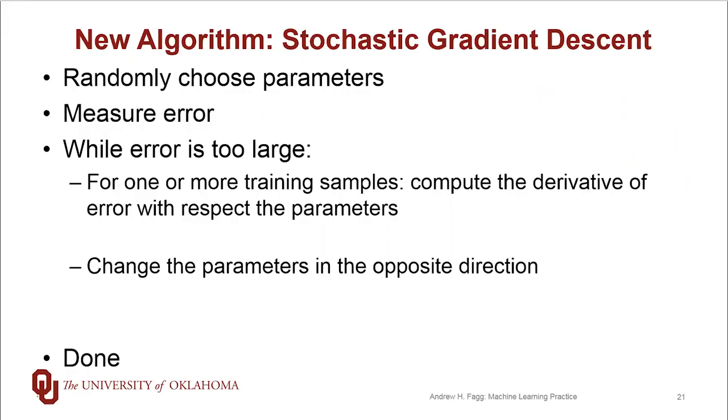So here is our candidate algorithm. And this is actually implemented for us in scikit-learn under the heading of stochastic gradient descent. We're going to first randomly choose our parameters w0, 1, and 2. We can measure the error. And while that error is too big, then we're going to grab either all of our training samples or a subset of our training samples. We can compute for those training samples, d e d w0, w1, and w2. So we're computing the derivatives with respect to each of those parameters. And then we change the parameters in the direction that is opposite of what the derivative is suggesting.